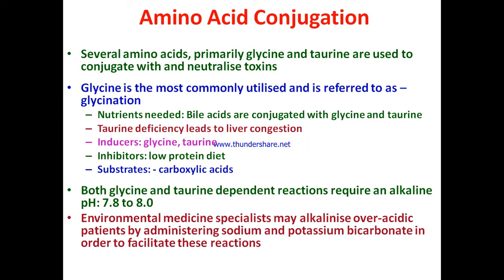Induces for amino acid conjugation are glycine and taurine; inhibitor is a low-protein diet; carboxylic acids are the substrates. Both glycine- and taurine-dependent reactions require an alkaline pH. In environmental medicine, the pH of body is increased in over-acidic patients by administering sodium and potassium bicarbonate, in order to facilitate the biotransformation process by conjugation to detoxify xenobiotics. Glutathione conjugation: glutathione is a tripeptide of glutamic acid, cysteine, and glycine. The primary enzyme is glutathione S-transferase. Vitamin C increases glutathione stores by stimulating glutathione synthesis. Inducers are ellagic acid, brassica vegetables, and D-limonene; inhibitors are deficiency of selenium, betaine, and zinc. Phenols, amines, and diols are detoxified by glutathione conjugation.